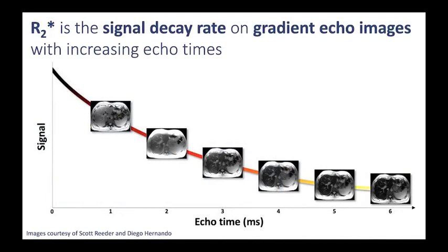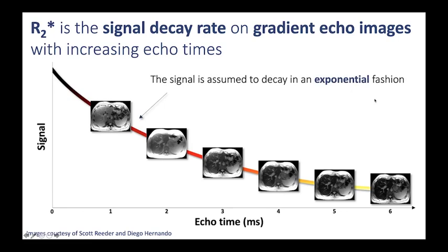R2* is a decay rate, and it refers to the signal decay rate on gradient echo images with increasing echo times. Shown here are gradient echoes of the liver obtained at echo times of 1, 2, 3 milliseconds and so on up to 6. Notice that the signal intensity of the liver decreases monotonically as a function of echo time, and the decay is approximately exponential. If we assume the signal to be exponential decay, then we can write that signal intensity equals e to the minus R2* times the echo time, and the R2* is the decay rate of interest.